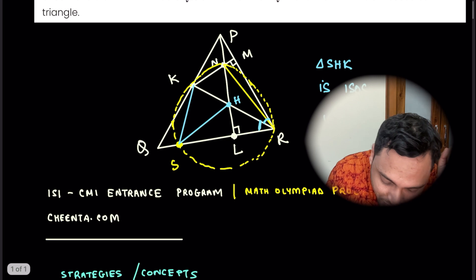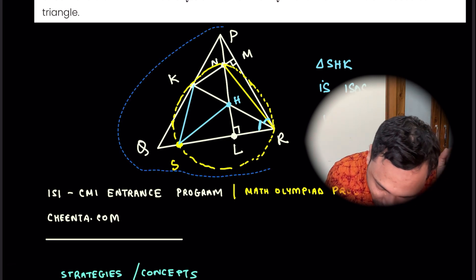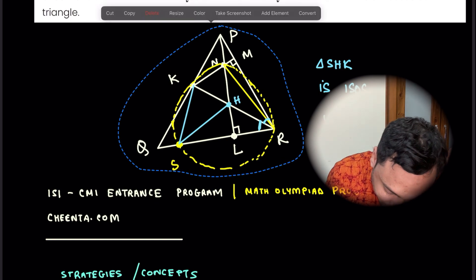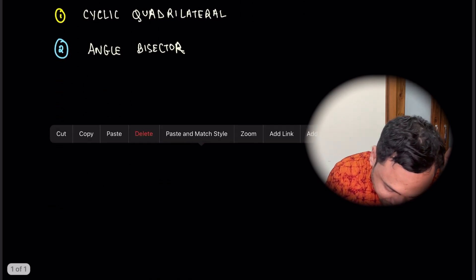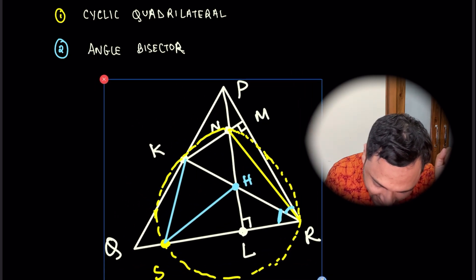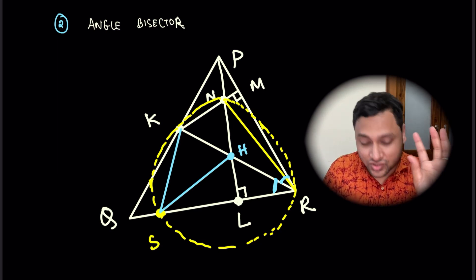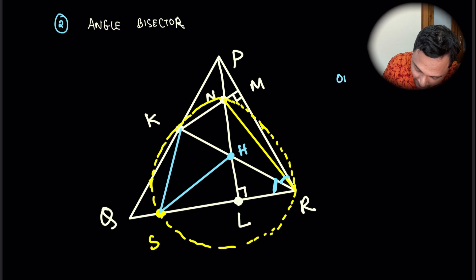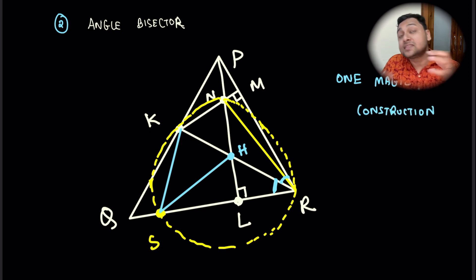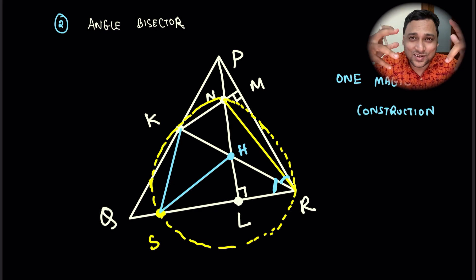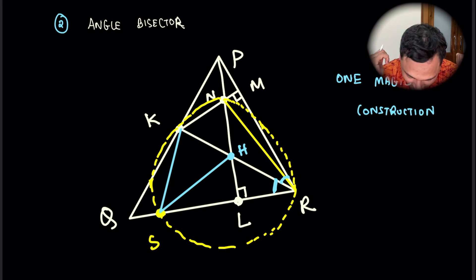Alright, so let's look at this problem. How do we solve that? I'll copy this particular diagram and put it here. So one of the things is, there is one crucial construction, one magic construction. You know, this is often true about geometry problems that if you do one very crucial construction and do some initial observations, the problem sort of unlocks itself and it's kind of magical.